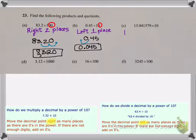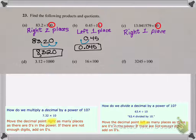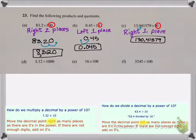Let's look at part C. I'm multiplying again so I know I'm going to the right. The number 10 has one zero so I'm going to the right one place. Instead of writing this out I'm just going to move the decimal point in the problem itself — one place to the right, so the decimal point comes after the zero before the four. So this becomes 1300.41579.